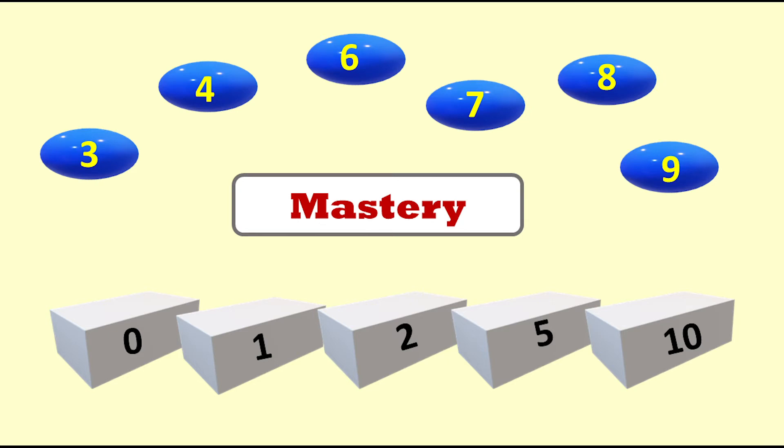A good order in which to learn the foundational facts is 1, 0, 2, 10, 5. 1 and 0 are straightforward, but do need to be covered explicitly.